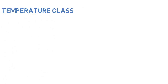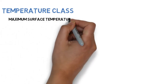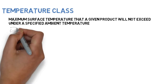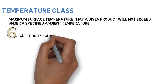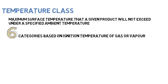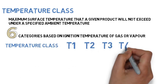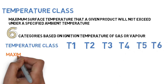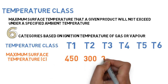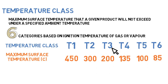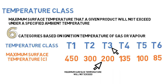Temperature class denotes the maximum surface temperature that a given product will not exceed under a specified ambient temperature. Temperature class is classified into six categories based on ignition temperature of gas or vapor: T1, T2, T3, T4, T5, and T6. Accordingly, the maximum surface temperature is provided. For example, a product with a T code of T3 means that its maximum surface temperature will not exceed 200 degrees Celsius, provided it is operated at an ambient temperature defined by the manufacturer.